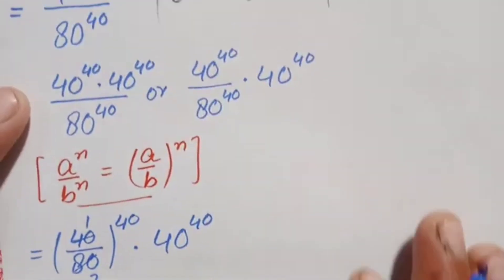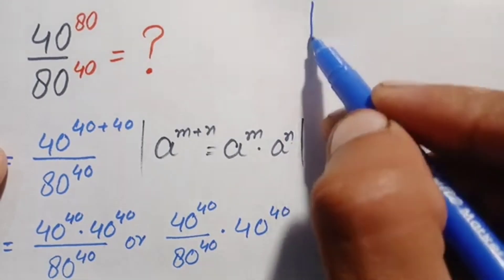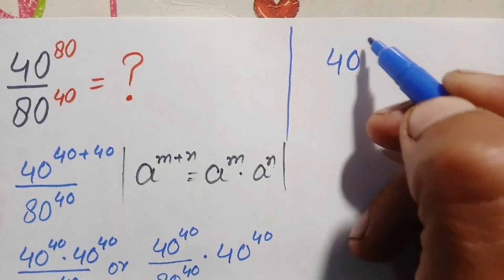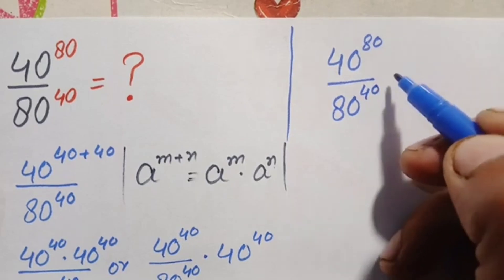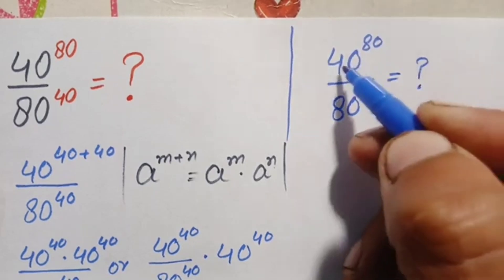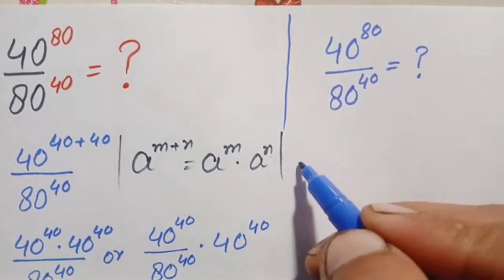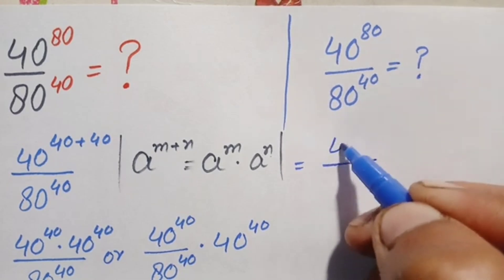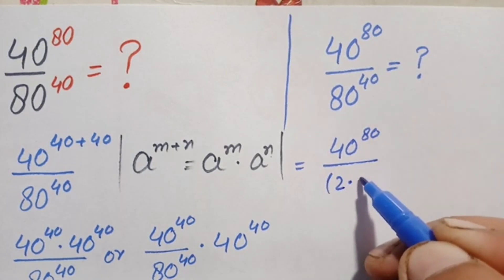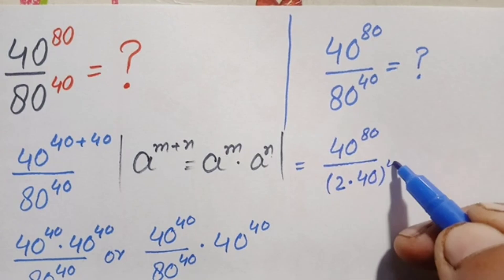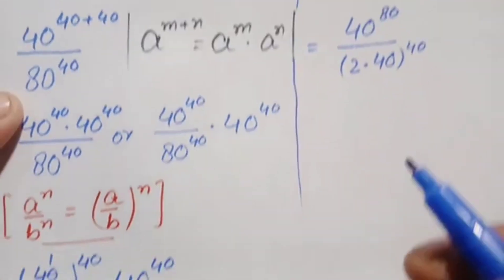Now we solve this using the second method. The problem is 40 raised to power 80 divided by 80 raised to power 40. In this method, we make the bases the same by factorizing. So we rewrite 80 in the denominator as 2 times 40, giving us 40 raised to power 80 divided by (2 times 40) raised to power 40.